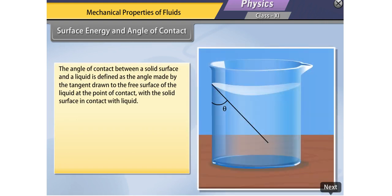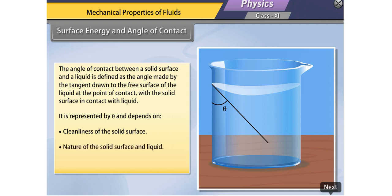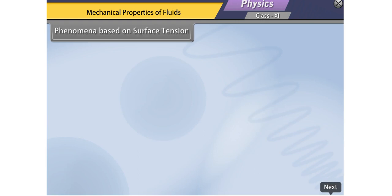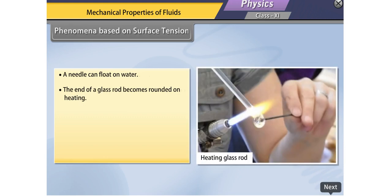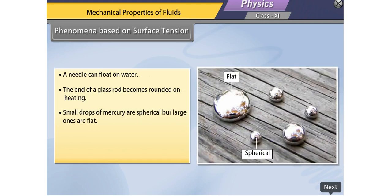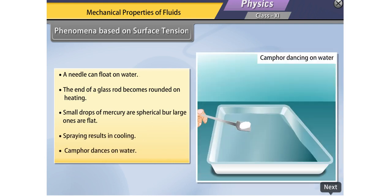The angle of contact between a solid surface and a liquid is defined as the angle made by the tangent drawn to the free surface of the liquid at the point of contact with the solid surface. It is represented by θ and depends on cleanliness of the solid surface, nature of the solid and liquid, and the medium above the free surface. Phenomena based on surface tension include: a needle can float on water; the end of a glass rod becomes rounded on heating; small drops of mercury are spherical while large ones are flat; spraying results in cooling; and camphor dances on water.